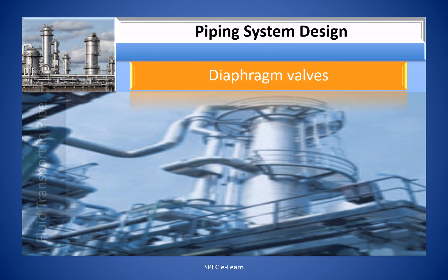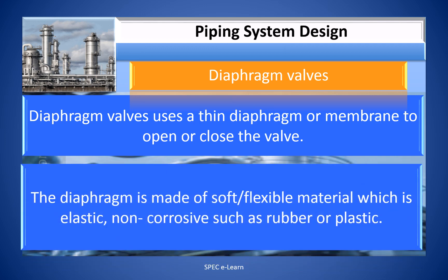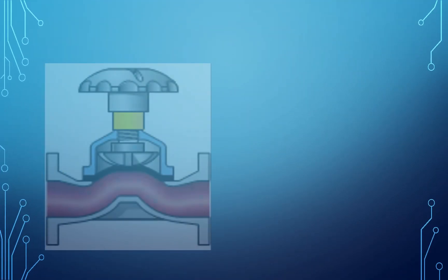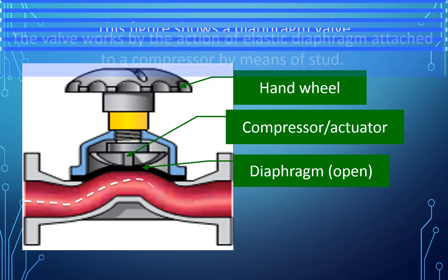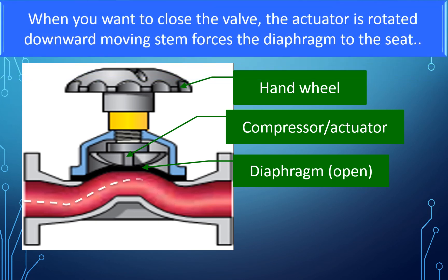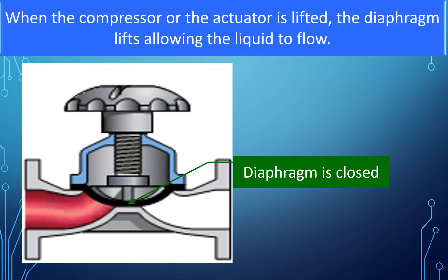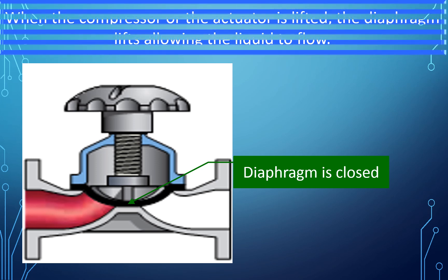Diaphragm valves use a thin diaphragm or membrane to open or close the valve. The diaphragm is made of soft, flexible, elastic, non-corrosive material such as rubber or plastic. The valve works by the action of an elastic diaphragm attached to a compressor by means of a stud. When you want to close the valve, the compressor or actuator is rotated or pressed, and the downward moving stem forces the diaphragm to the seat. When the compressor or actuator is lifted, the diaphragm lifts, allowing the liquid to flow.